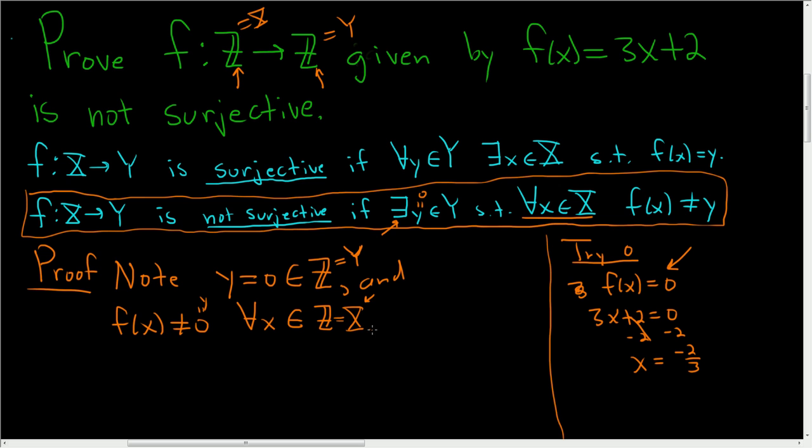If that doesn't seem like a proof, we can add more to it. We can prove it by contradiction. If it was, then we would have f(x) equal to 0, which implies 3x + 2 equals 0, so x equals negative 2/3. But that is not in the set of integers - we said it was. So it's not in the set of integers, a contradiction.